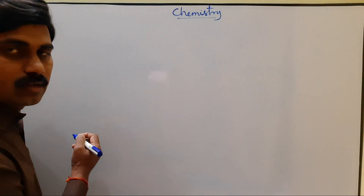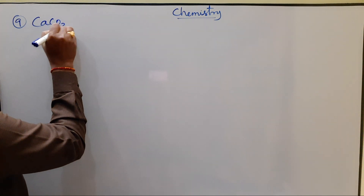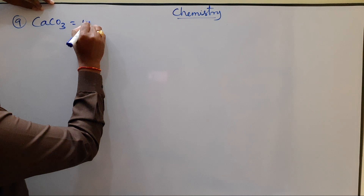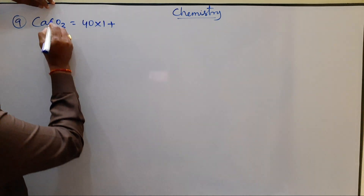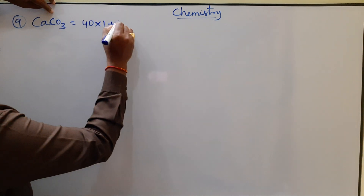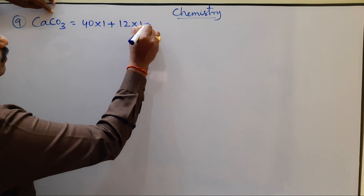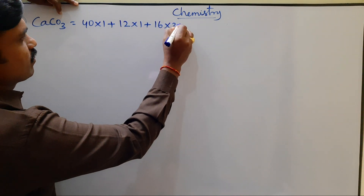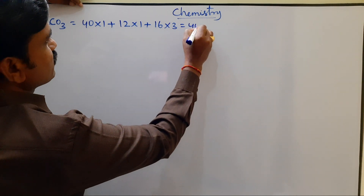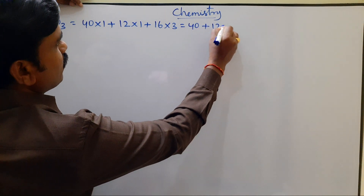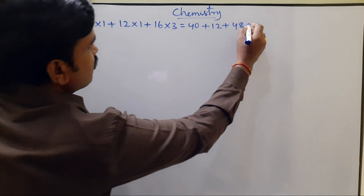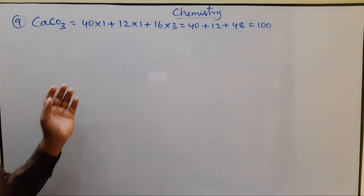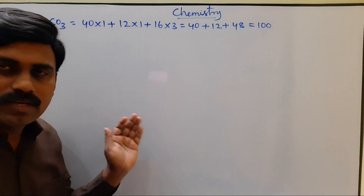Next, Calcium Carbonate, CaCO3. Calcium atomic weight is 40: 40 × 1, plus Carbon atomic weight 12 × 1, plus Oxygen atomic weight 16 × 3. That is 40 plus 12 plus 48, which equals 100. So the molecular weight of calcium carbonate is 100.